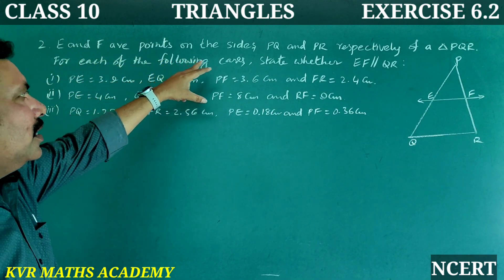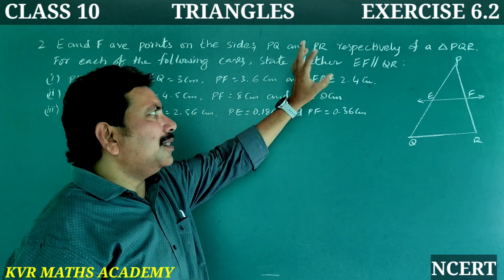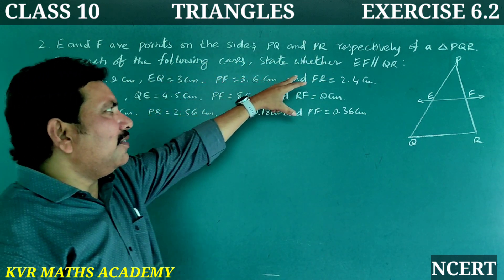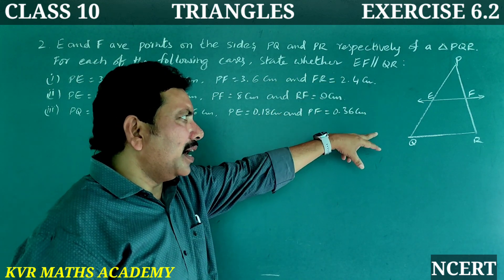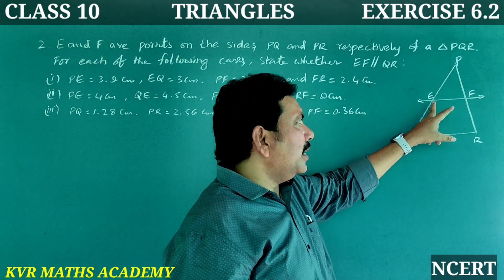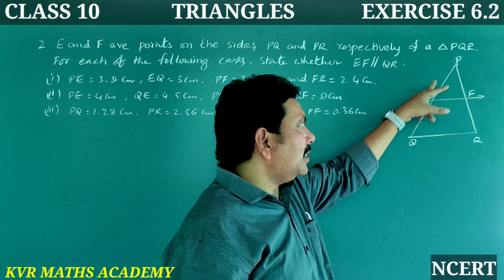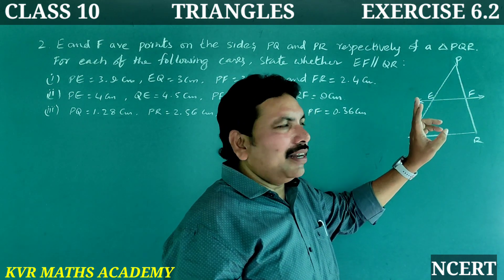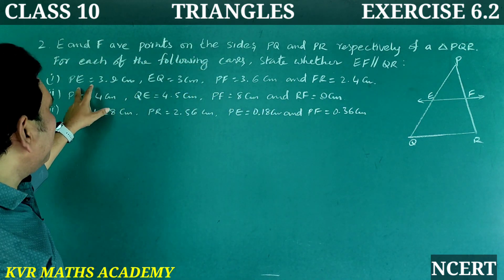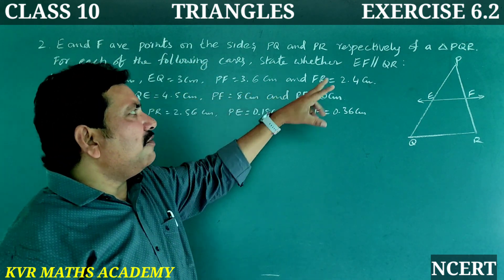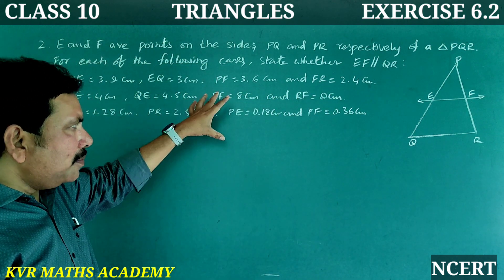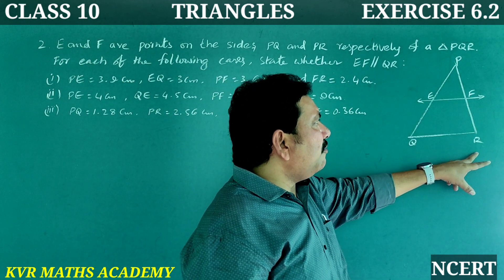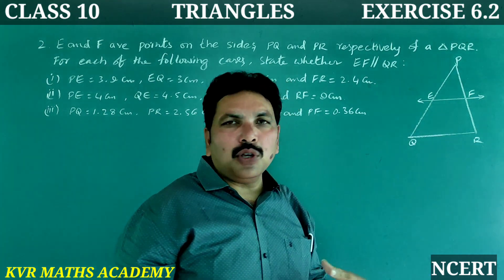Second question: E and F are points on the sides PQ and PR respectively of triangle PQR. For each of the following cases, state whether EF is parallel to QR. For each case, we check if PE by EQ is equal to PF by FR. If equal, EF is parallel to QR; if not equal, EF is not parallel to QR.